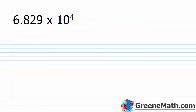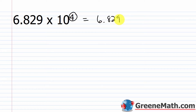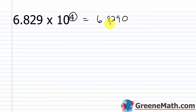What about 6.829 times 10 to the 4th? The exponent is 4, so I move the decimal point four places to the right — putting a zero behind the 9 — and end up with 68,290.